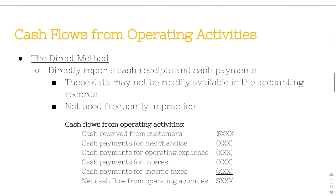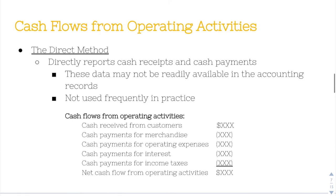We're going to focus on cash flows from operating activities, and there are two methods for determining them. The first is the direct method, and exactly what it sounds like, it directly reports cash receipts and cash payments. The issue is that this data may not be readily available in the accounting records, so it's not used frequently in practice.